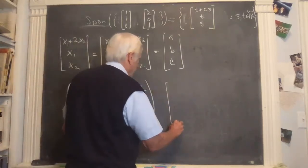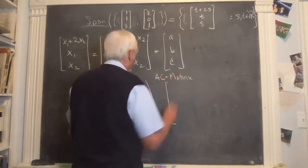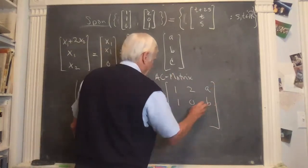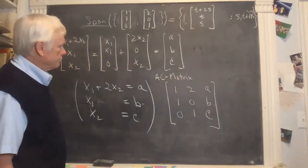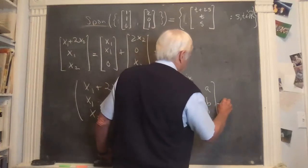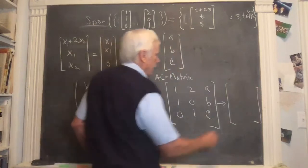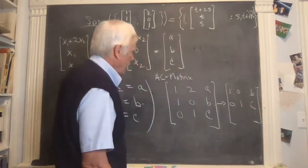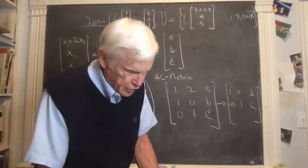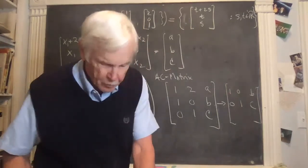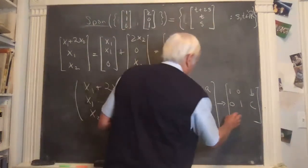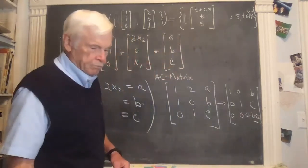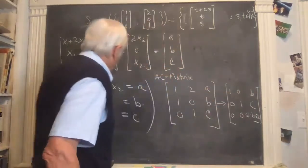In matrix form, the augmented coefficient matrix is [1,2,A; 1,0,B; 0,1,C]. Row reducing this gives [1,0,B; 0,1,C; 0,0,A-B-2C]. So after row reduction, the last row is 0x1 + 0x2 = A minus B minus 2C.